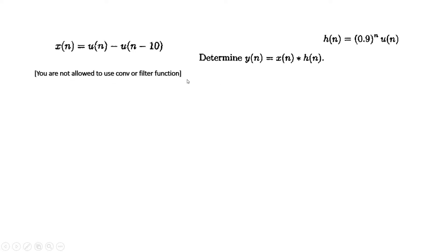The condition given is that you are not allowed to use the conv or filter function. If the question allows conv or filter, you can easily write the code and get your marks. But in most cases you are not allowed to use any built-in functions, so let us try to understand how to do it in that case.